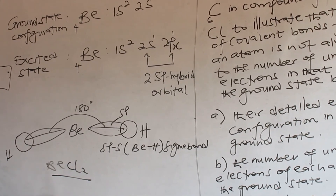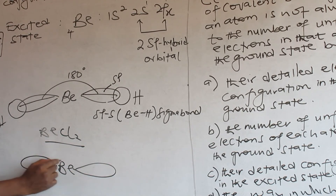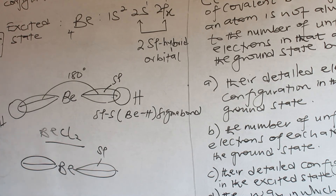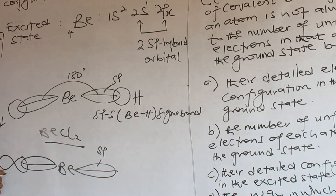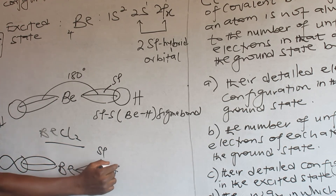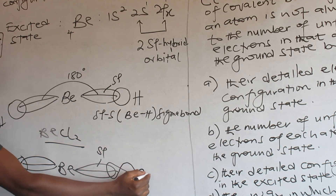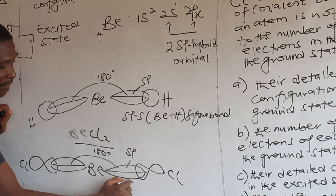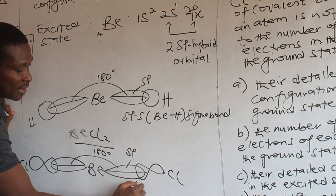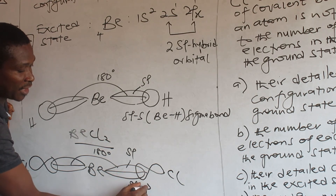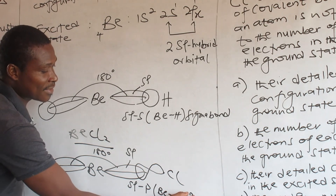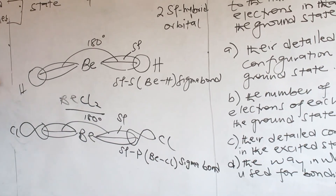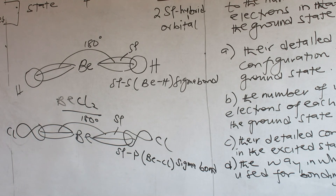BeCl2 — an sp hybrid orbital will overlap axially with a p orbital from chlorine. So you form an sp–p beryllium-chlorine sigma bond at the same bond angle of 180 degrees. The overlap is head-on, not sideways.